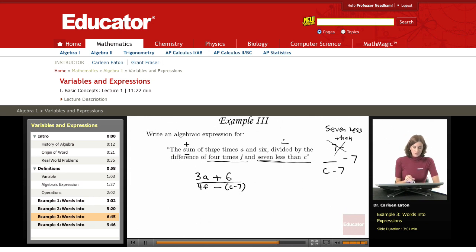So I had the sum of three times a and six. That's 3a plus 6. That sum divided by the difference of four f and seven less than c, which is c minus seven. This is the algebraic expression for this complex sentence we were given.